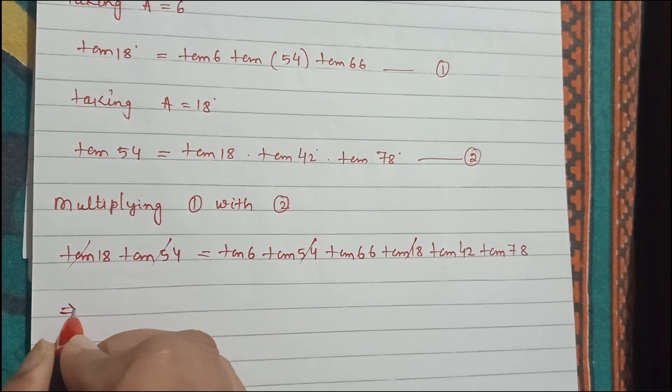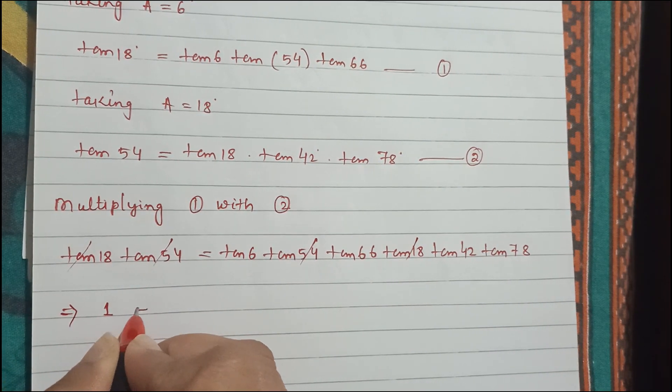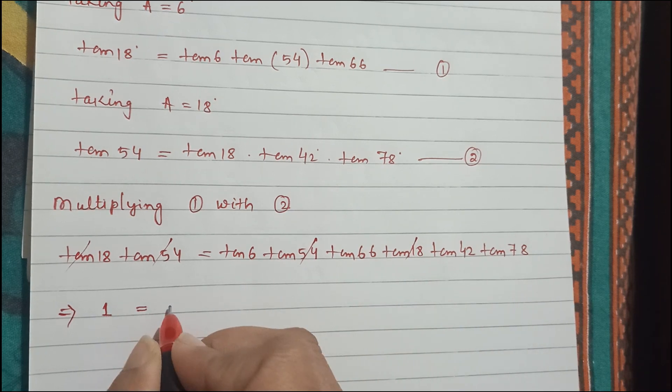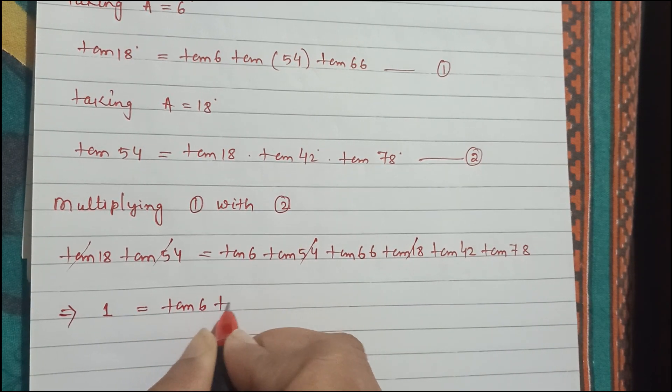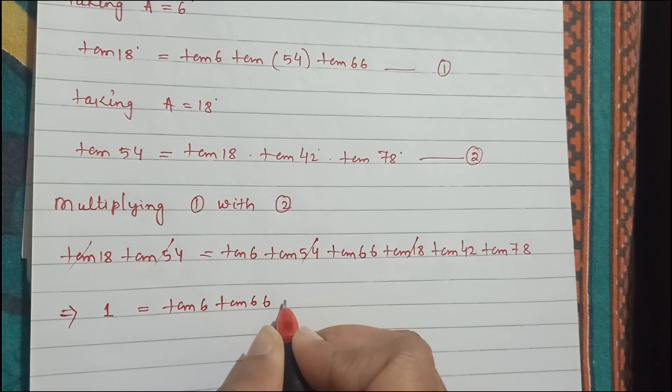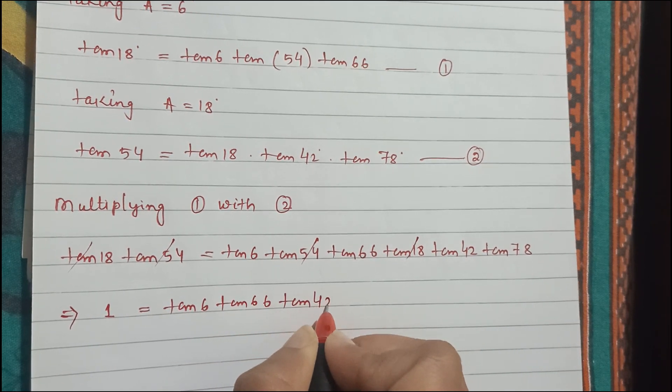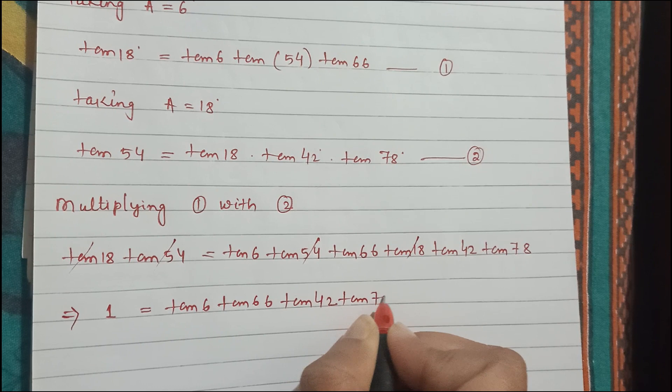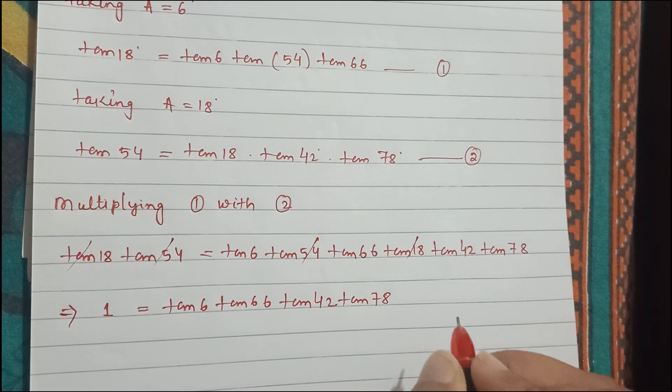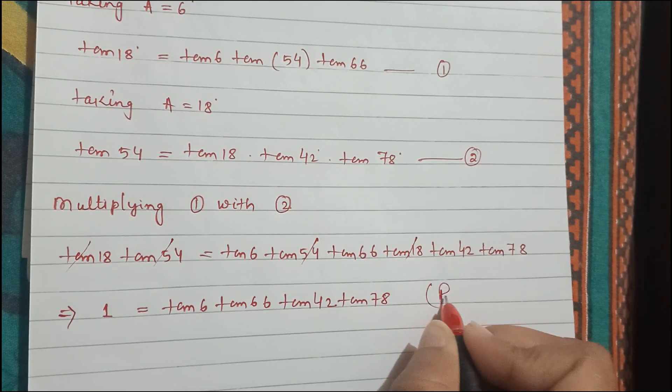We will get the answer: left side we will have one, and on the right hand side we will get tan 6 tan 66 tan 42 tan 78. So this is the proof.